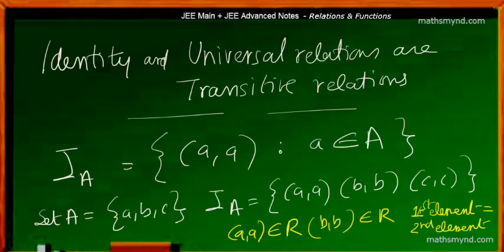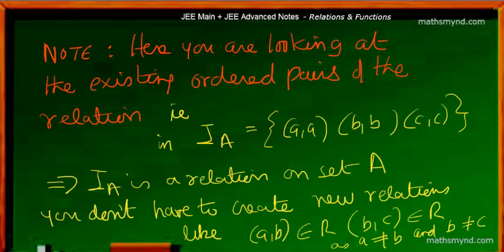That property can be applied across all ordered pairs as far as an identity relation is concerned. One very important point to remember is that you are taking the identity relation as such — the ordered pairs in this particular example are (a,a), (b,b), and (c,c) — and we are not looking at creating new ordered pairs.